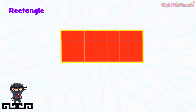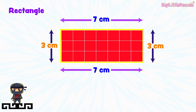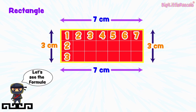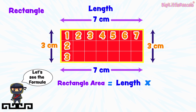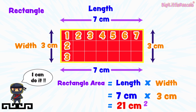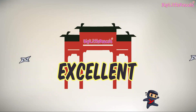Now, what is the area of a rectangle? Let's see the formula. Rectangle area equals length multiplied by its width. Rectangle area equals 7 centimeters multiplied by 3 centimeters, which equals 21 square centimeters. Don't forget the square unit sign at the end — 21 square centimeters. Excellent work, everyone!